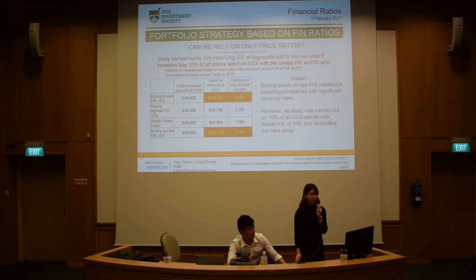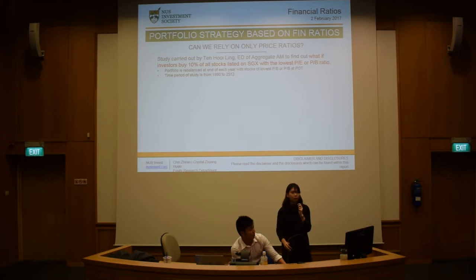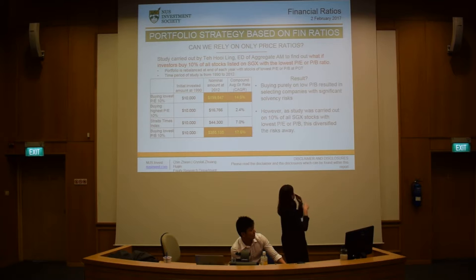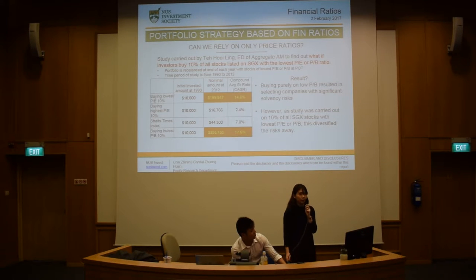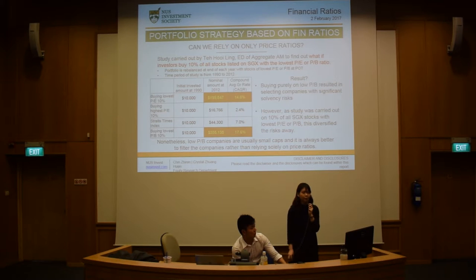So, one thing to ask is: can we only rely on price ratios? There is a study carried out by Tae-Hui Ling, Executive Director of Aggregate Asset Management, to find out what happens if investors buy 10% of all stocks listed on SGX with only the lowest PE or price-to-book value ratios. The portfolio was rebalanced at the end of each year with the lowest PE and PB stocks, over the period from 1990 to 2012. The result is that buying purely on low PB resulted in selecting companies with significant solvency risk. The study was carried out on 10% of all SGX stocks with the lowest PE and PB, which diversified the risks away. But the moral of the story is that low PB companies are usually small caps, and it is always better to filter companies rather than relying solely on price ratios.